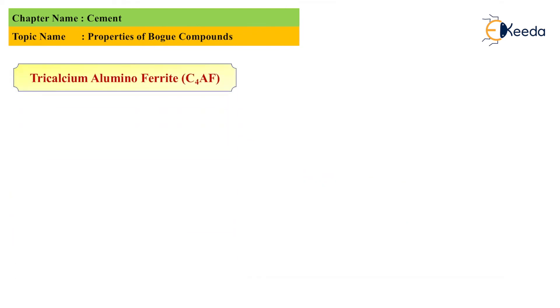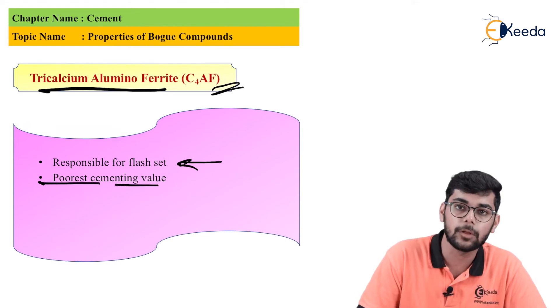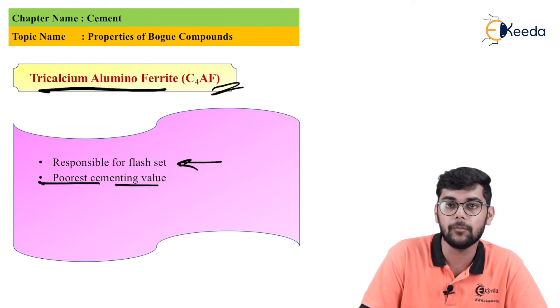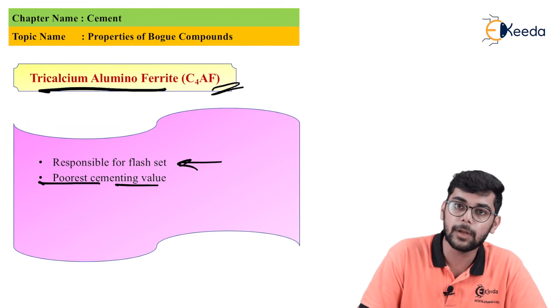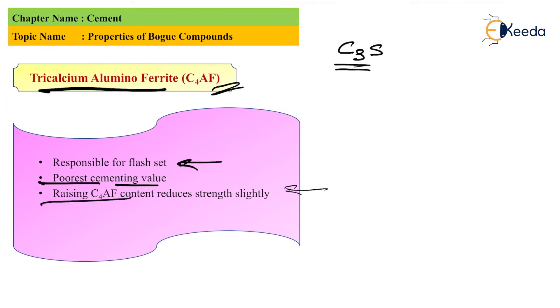Now we will talk about tricalcium alumino ferrite, C4AF. It is again responsible for flash set and it has the poorest cementing value. C4AF has the poorest cementing value, and highest cementing value is of C3S. Raising C4AF reduces the strength, and the heat of hydration is 420 joules per gram.